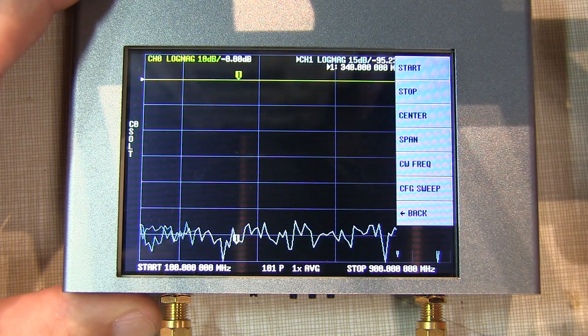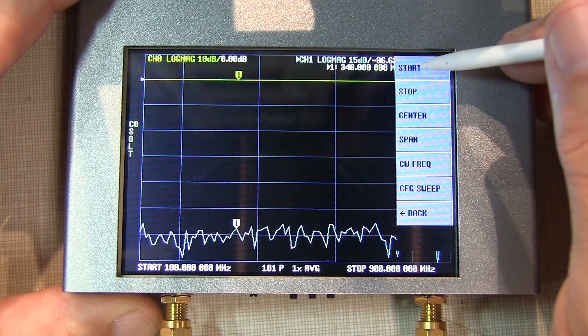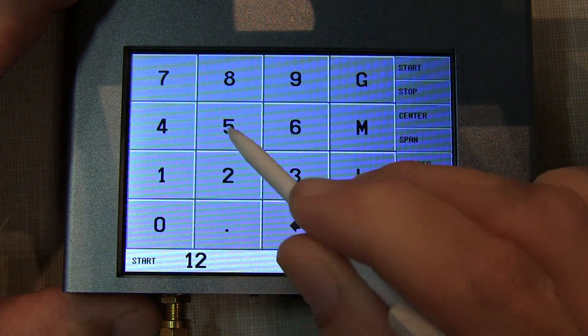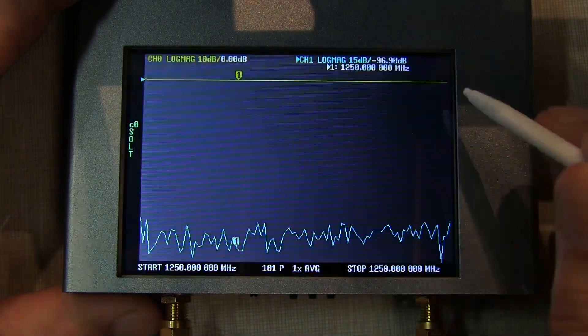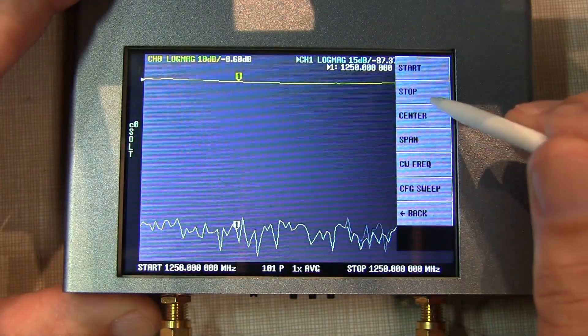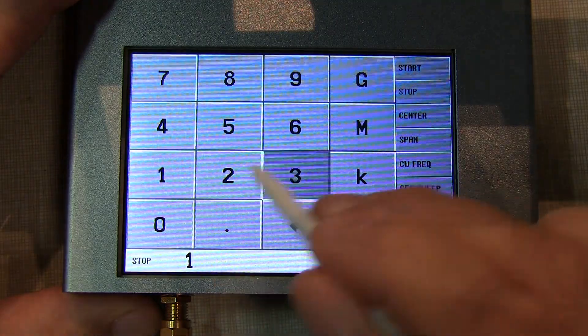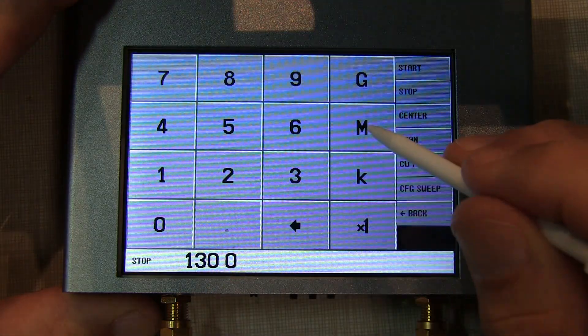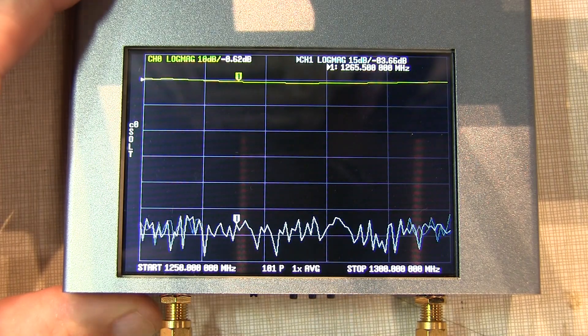Let's set up the stimulus. I'm going to set a start frequency of 1250 megahertz and a stop frequency of 1300 megahertz. That should cover the operating frequency range for this duplexer.